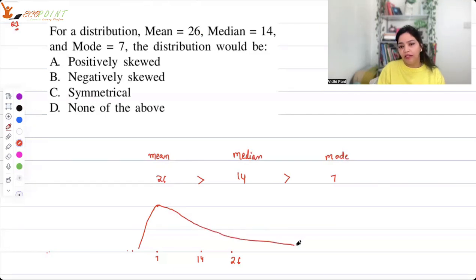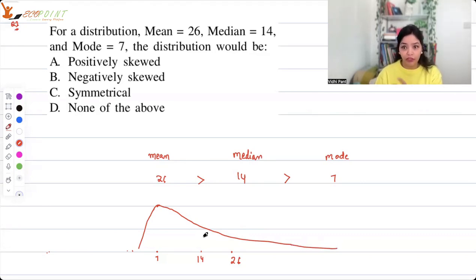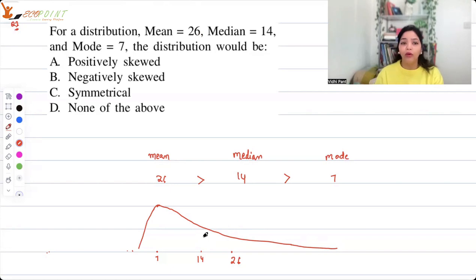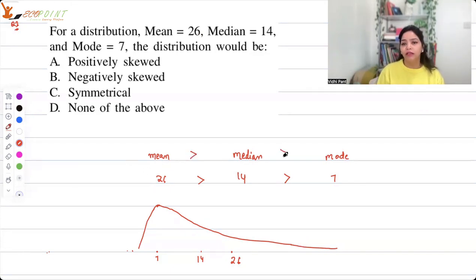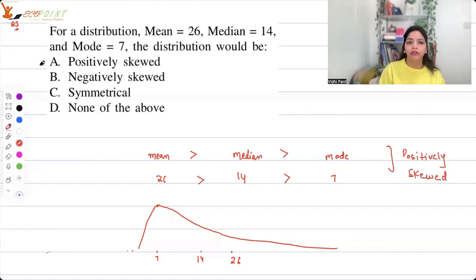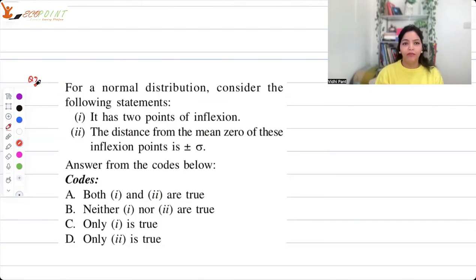This is not the exact diagram, just a picture to help you understand. Clearly it's a scenario where your distribution would be right-skewed, or positively skewed. This is the case when mean is greater than median is greater than mode — it's positively skewed, that is right-skewed. So option A should be the correct answer.